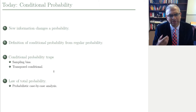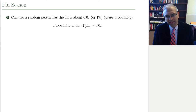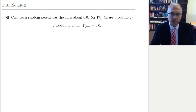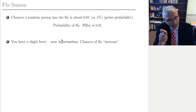Let's see how the arrival of new information can require us to change a probability. Take the concrete example of the flu. If you randomly pick a person, chances are about 1% that they have a flu — so the probability of flu is approximately 0.01, assuming you are a random generic person picked from a crowd.